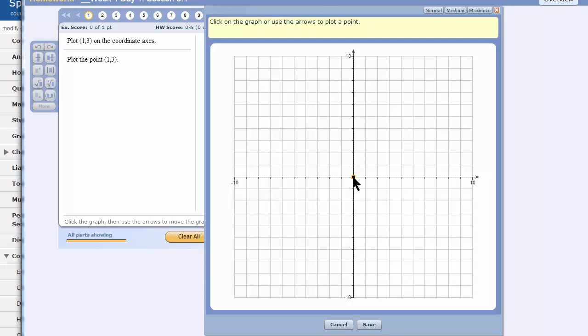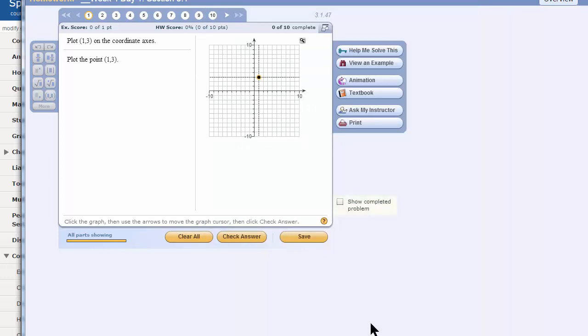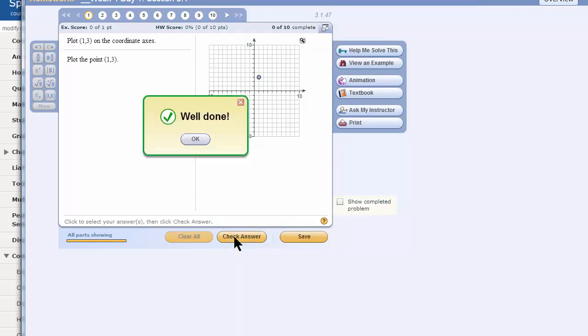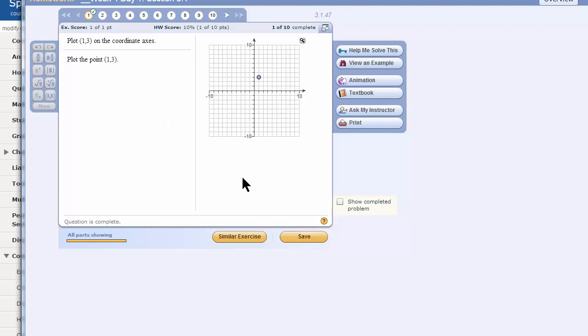So I am going to drag and drop this point to where I want it. I am going to go out to 1 on the x-axis, and I am going to go up to 3 on the y-axis. Notice how these lines are lined up with 1 on the x-axis and 3 on the y-axis. When I've put the point where I truly want it, I click save. Then I click check answer. Well done means I have it right. That's all there is to the mechanics of plotting points on MyMathLab.